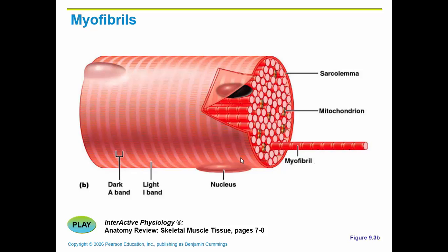This diagram shows one muscle fiber — one cell. Within the cell you can see the myofibrils with their dark A bands and lighter I bands, which cause the striation. Here is the nucleus of the cell, and here is another nucleus because it's multinucleated. The covering or cell membrane around the muscle fiber is the sarcolemma. Throughout the fiber you can also see mitochondria — we need a lot of mitochondria in our muscles because we need a lot of ATP to contract muscles.